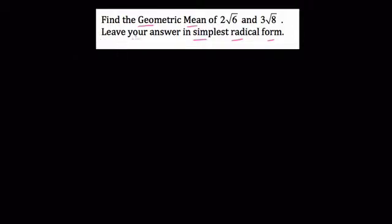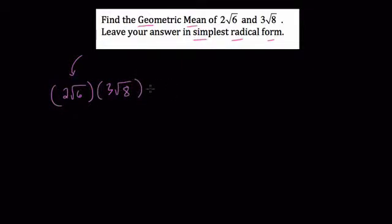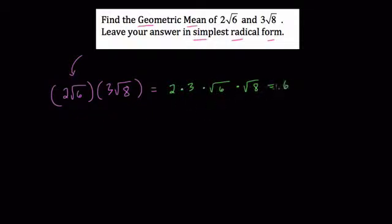With the geometric mean, we're going to be multiplying — unlike with arithmetic means where we add. So in the most direct way possible, we multiply our two numbers: 2 times the square root of 6, times 3 times the square root of 8. We can rearrange these terms because it's all multiplication, so we can commute numbers around and think of this as 2 times 3 times the square root of 6 times the square root of 8.